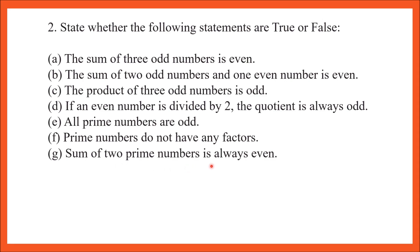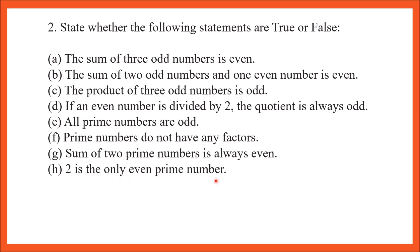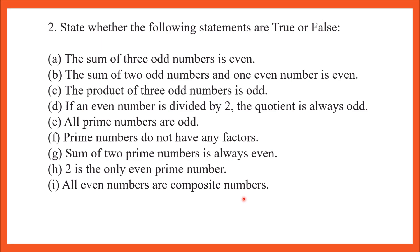Part G: the sum of two prime numbers is always even. Let's check. I took prime numbers 2 and 3, added them, and got 5, which is an odd number. So this statement is false. Part H: 2 is the only even prime number — this statement is true. Part I: all even numbers are composite numbers — this statement is false, because 2 is an even number that is not composite; it is a prime number.